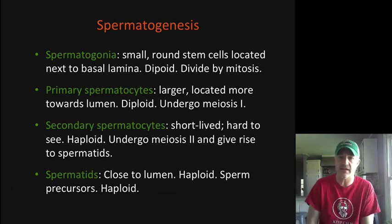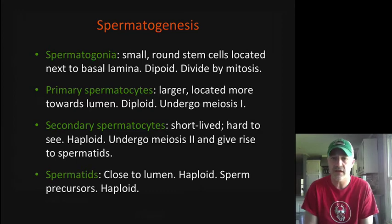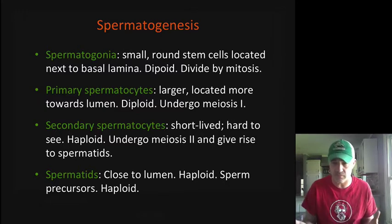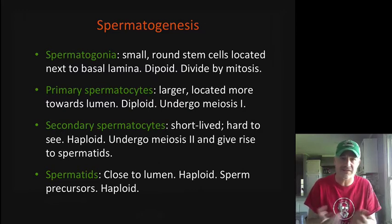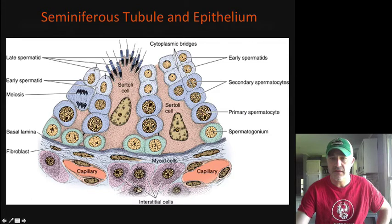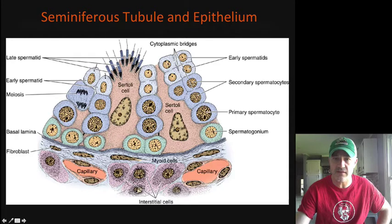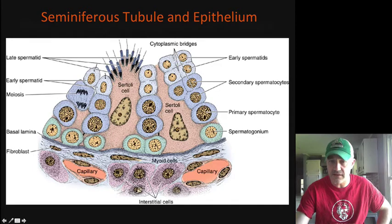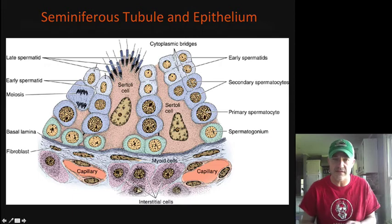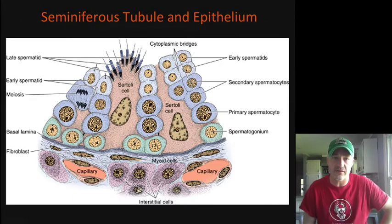The spermatogonia are those round stem cells up near the surface by the basal lamina, and they undergo mitosis. We then get to the larger primary spermatocytes more towards the lumen, and secondary spermatocytes — both in different stages of meiosis. As we get to the lumen you have the spermatids, which are the haploid cells that just need to finish their external development to become functioning spermatozoa. You can see the nucleus condenses down into the head of the sperm cell — those are the late spermatids that become spermatozoa during spermiogenesis.